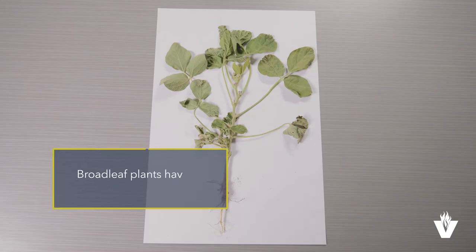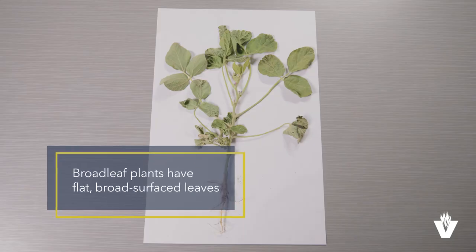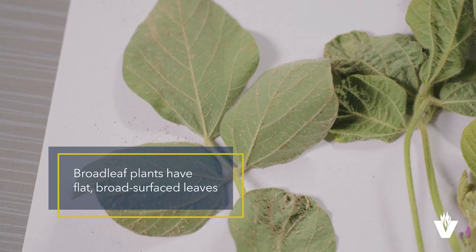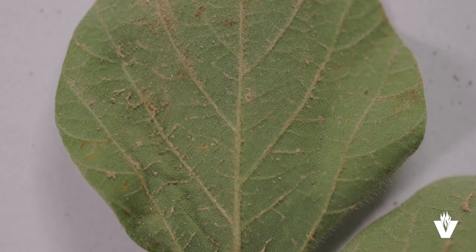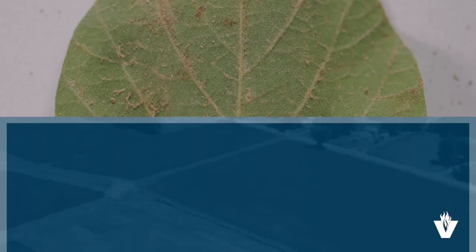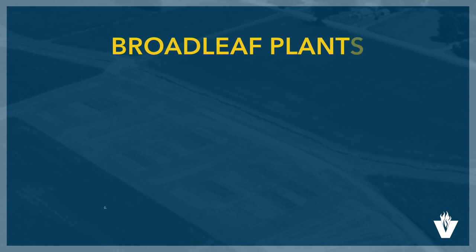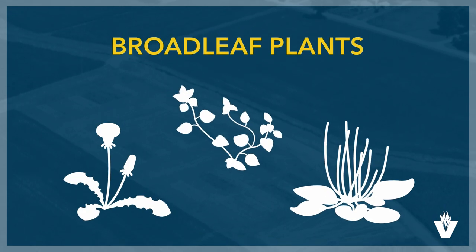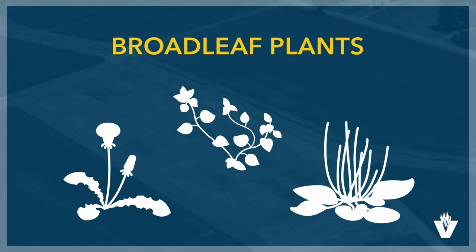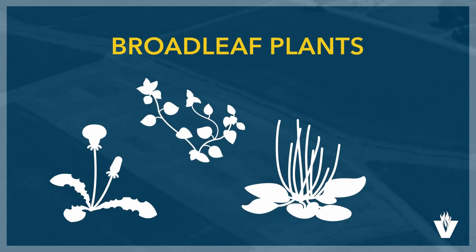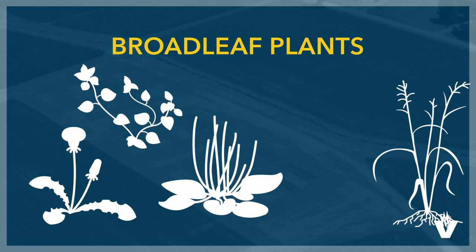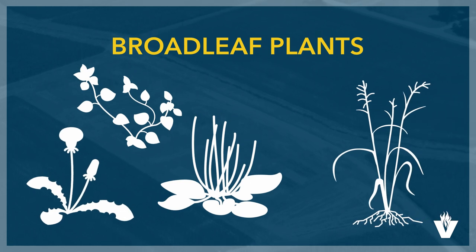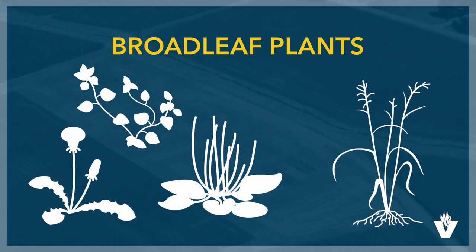Broadleaf plants have leaves with a flat, broad surface. The surface is often marked with a network of prominent veins. Broadleaf, as a term, is used to describe a large group of weeds to distinguish them from grassy, blade-leafed weeds.